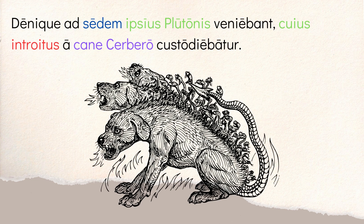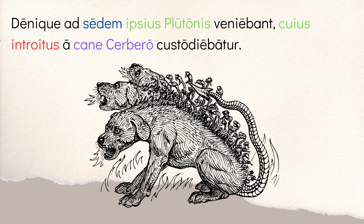Then we continue: 'denique ad sedem ipsius Plutonis veniebant, cuius introitus a cane Cerbero custodiebatur.' Finally — 'denique' — they came to the seat of Pluto himself. 'Sedem' can mean seat as in throne, but also abode or home, like 'the seat of power' in English. Whose entrance — 'cuius introitus' — was guarded — 'custodiebatur' — by the dog Cerberus, 'a cane Cerbero.' So Cerberus is right here at the heart of the underworld.